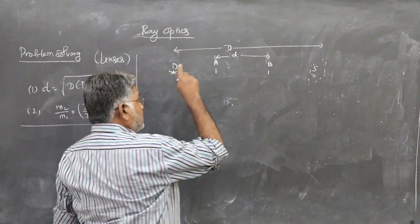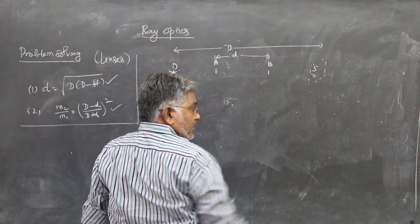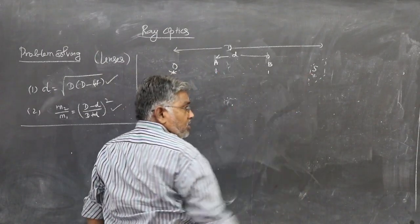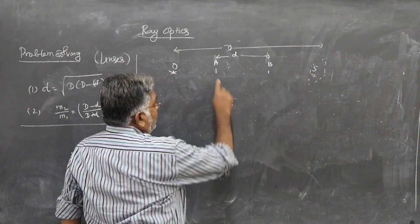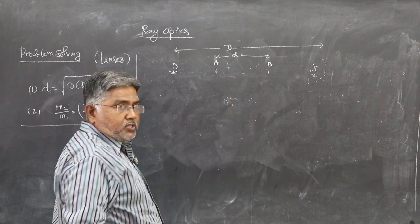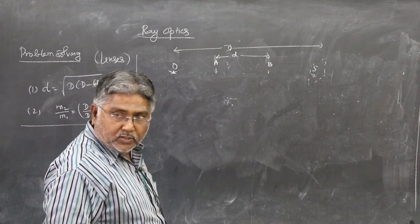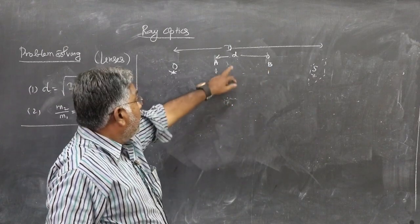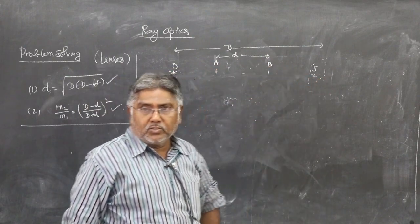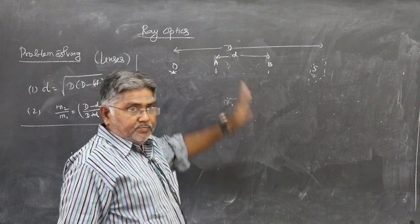When the convex lens is at position A, the image is formed on the screen. Again, when the convex lens is at position B, the image is formed on the screen. The distance between the two positions of the convex lens is called small d. The distance of separation between the object and the screen, which is fixed, is called capital D.